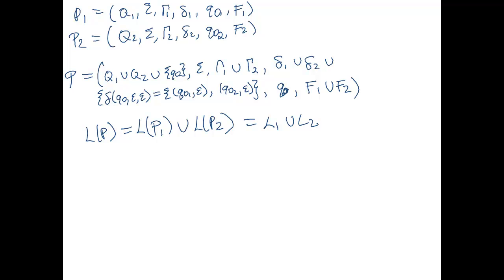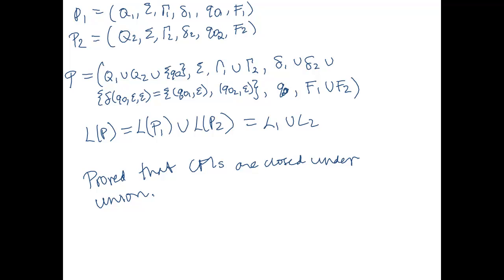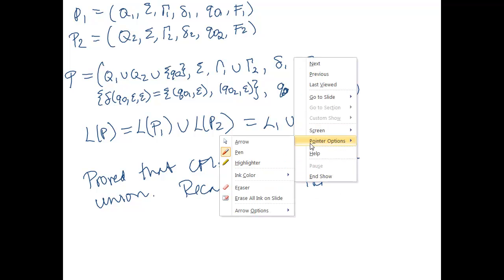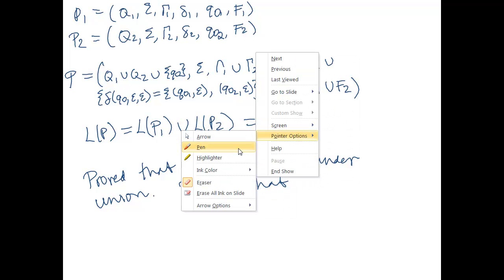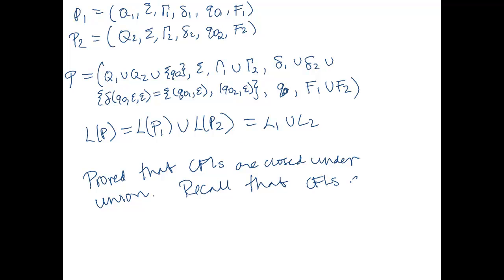So we've proved that context-free languages are closed under union. You might be saying we're supposed to be talking about complement — what does this have to do with complement? Well, we also recall that context-free languages are not closed under intersection.